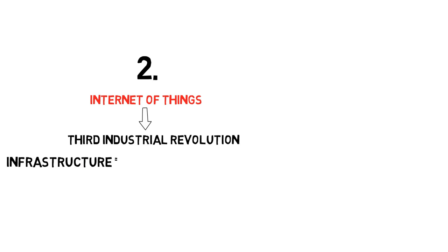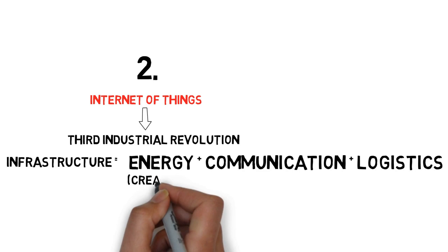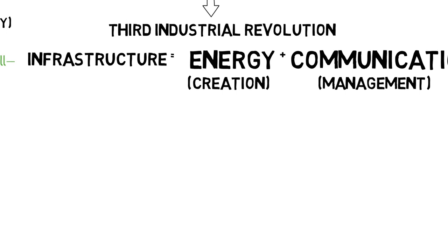What does a society need in terms of infrastructure to be functional? Well it's three elements: energy, communication and logistics, which are about creating, managing and moving economic activity across the value chain respectively.